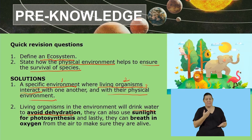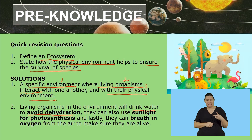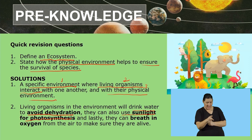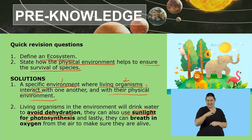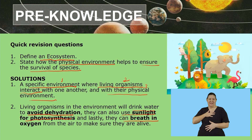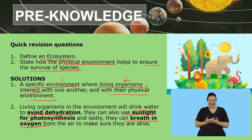Because if you are dehydrated, you have a possibility of dying. The second thing the physical environment helps with is that it also gives us sunlight for photosynthesis. Plants are also living organisms, so they need sunlight, which is a physical feature in the environment. And then lastly, we can breathe in oxygen from the air to make sure that we are alive.